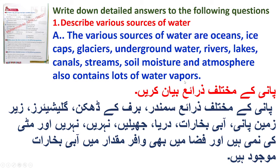Aur fizaa mein bhi aabi bukharat bahut mojood hote hain — in some places the air contains a lot of water vapors, and there people can get asthma. The chest is affected. If there are too many vapors in the air, that can cause it. In this way, all this water is present around us — we can even extract water from the air and use it.